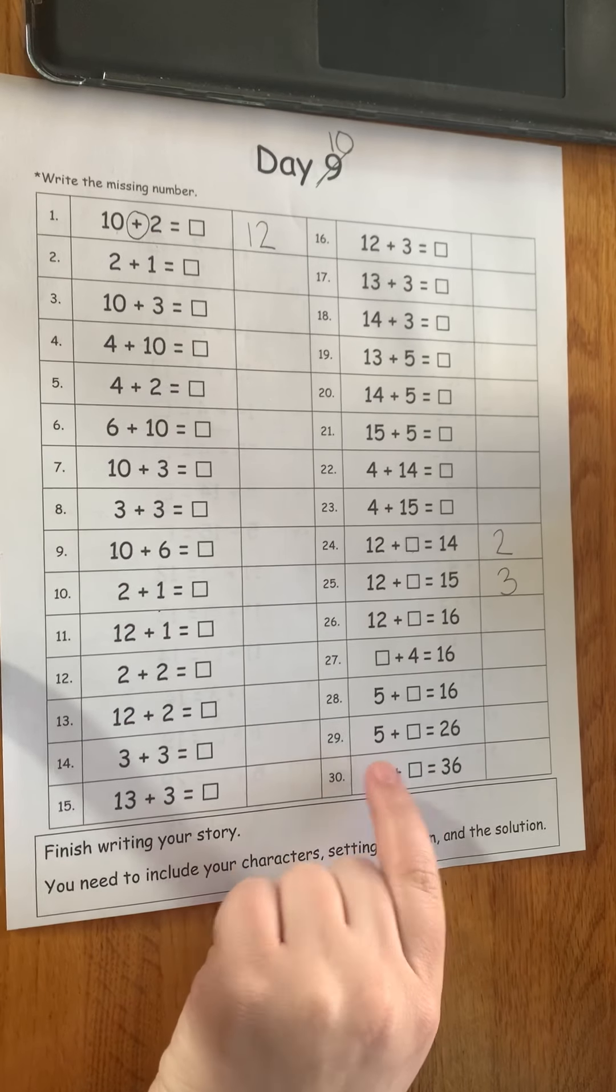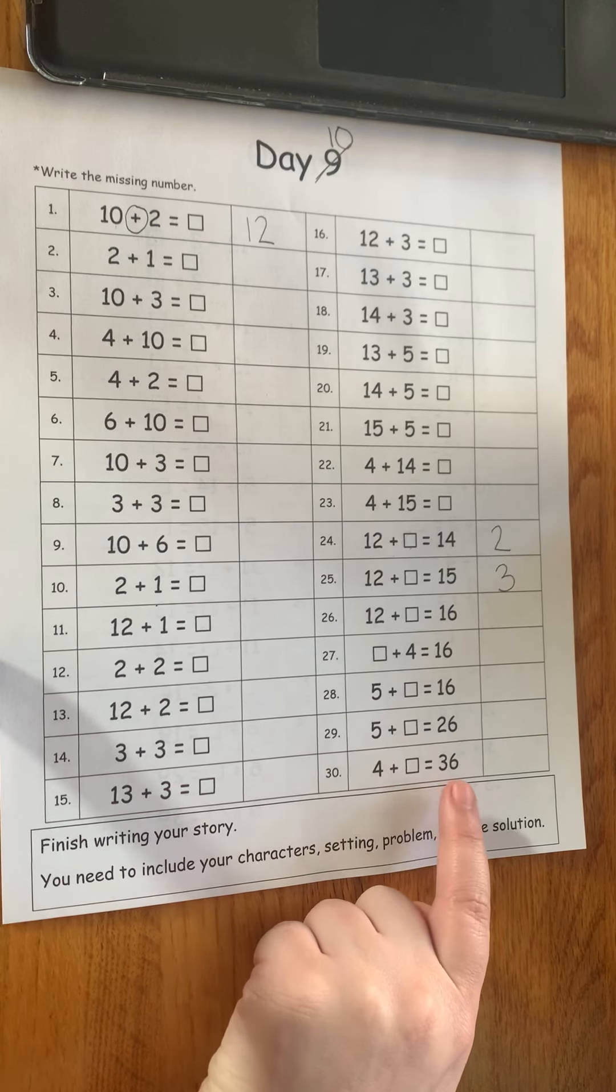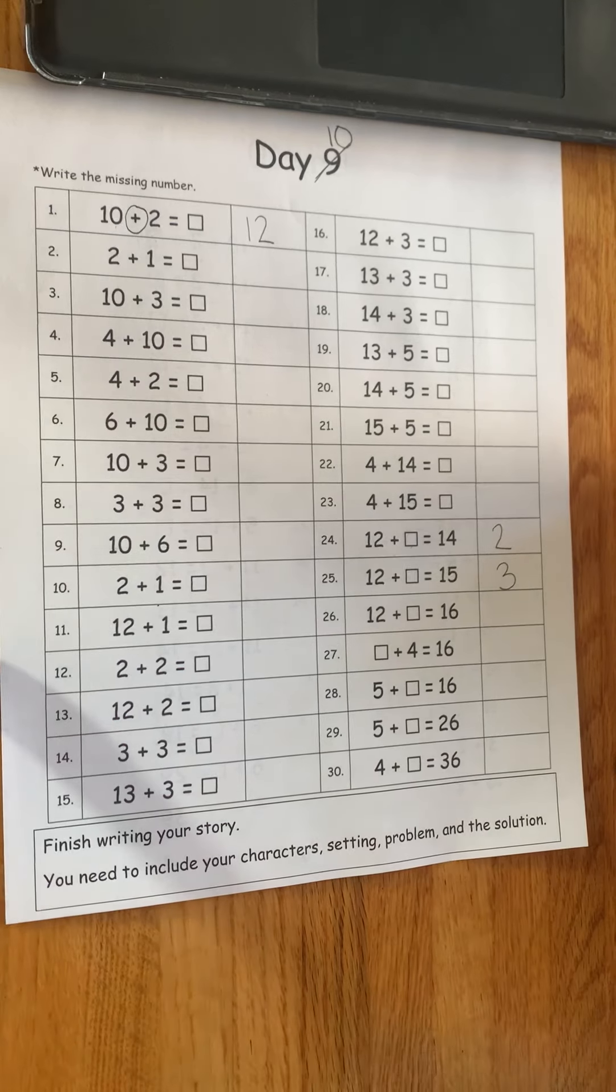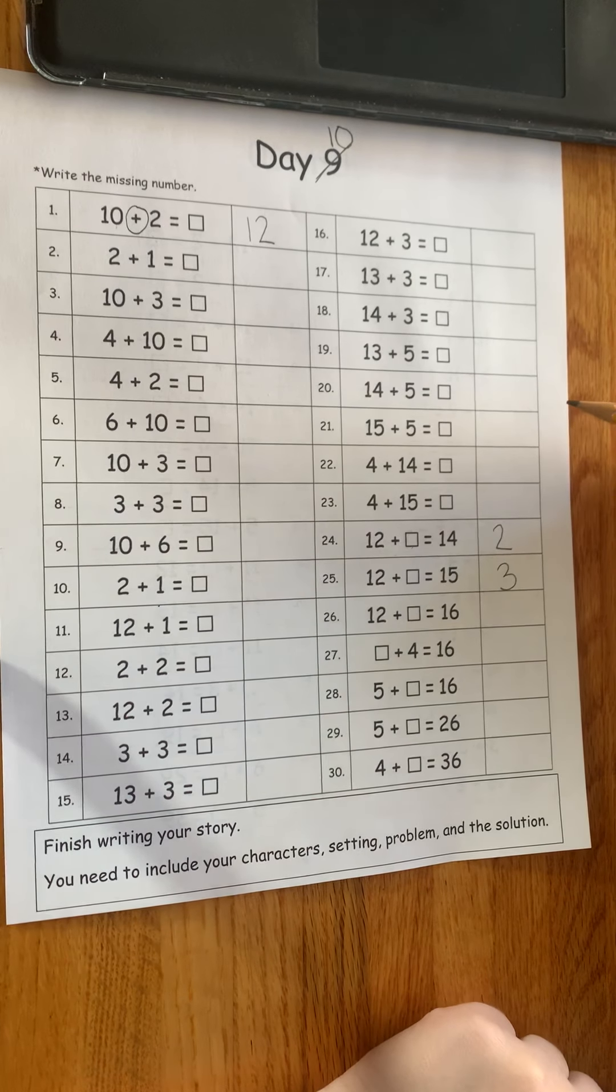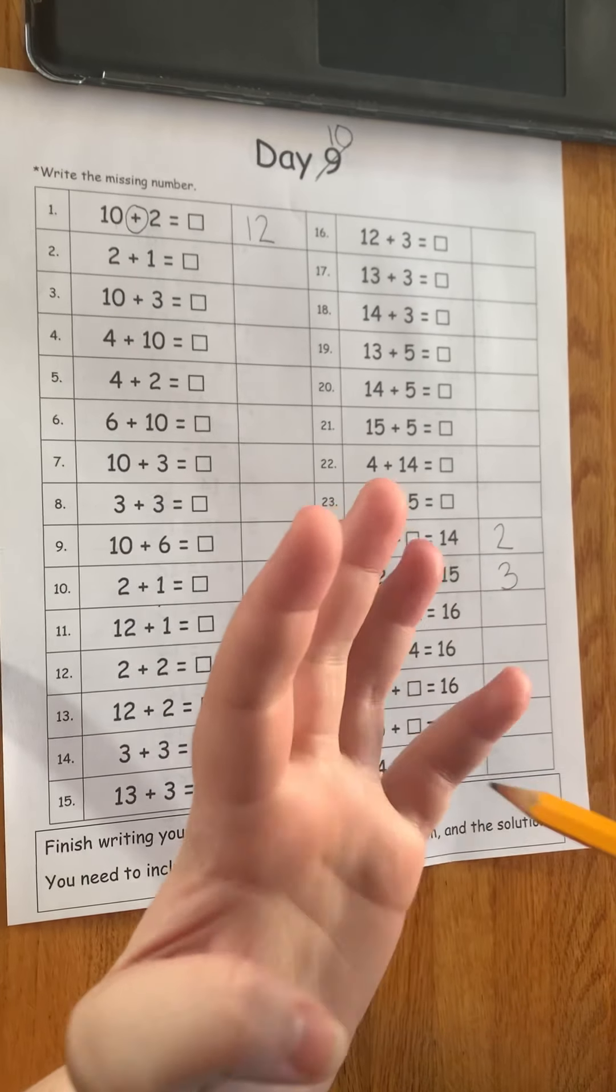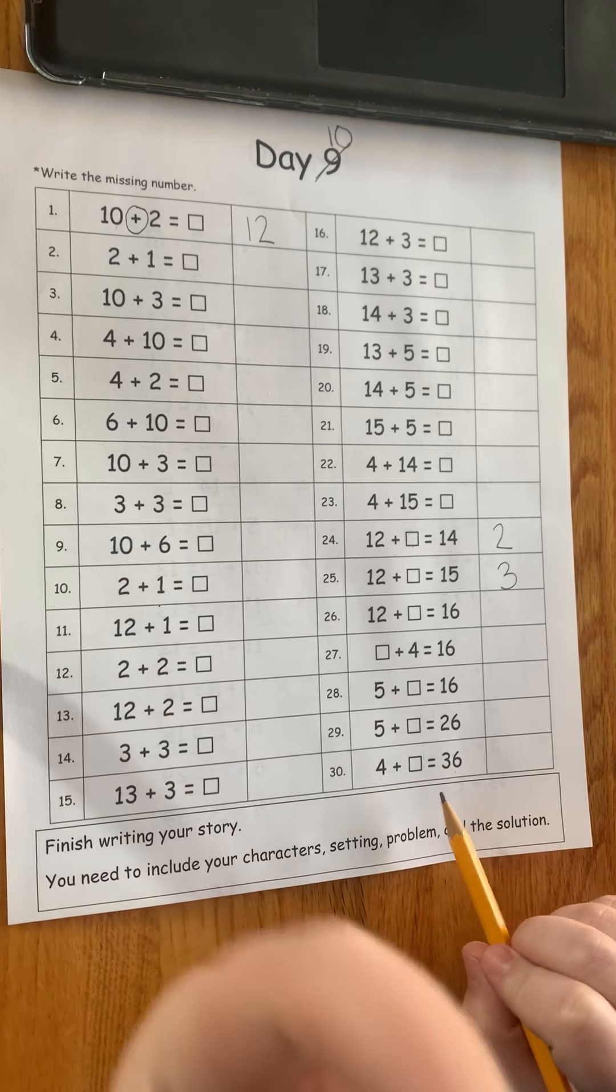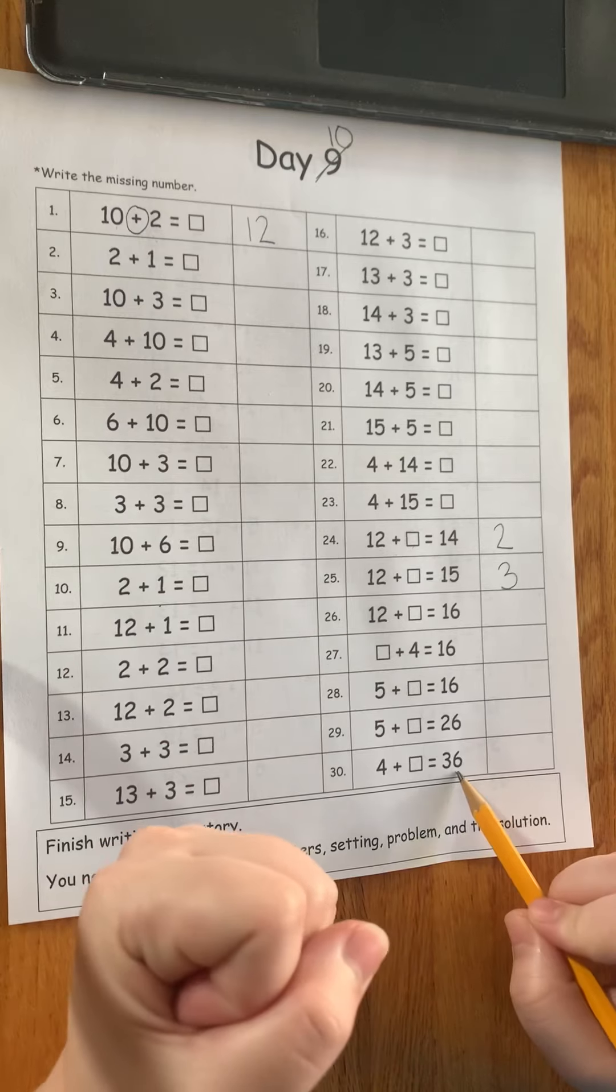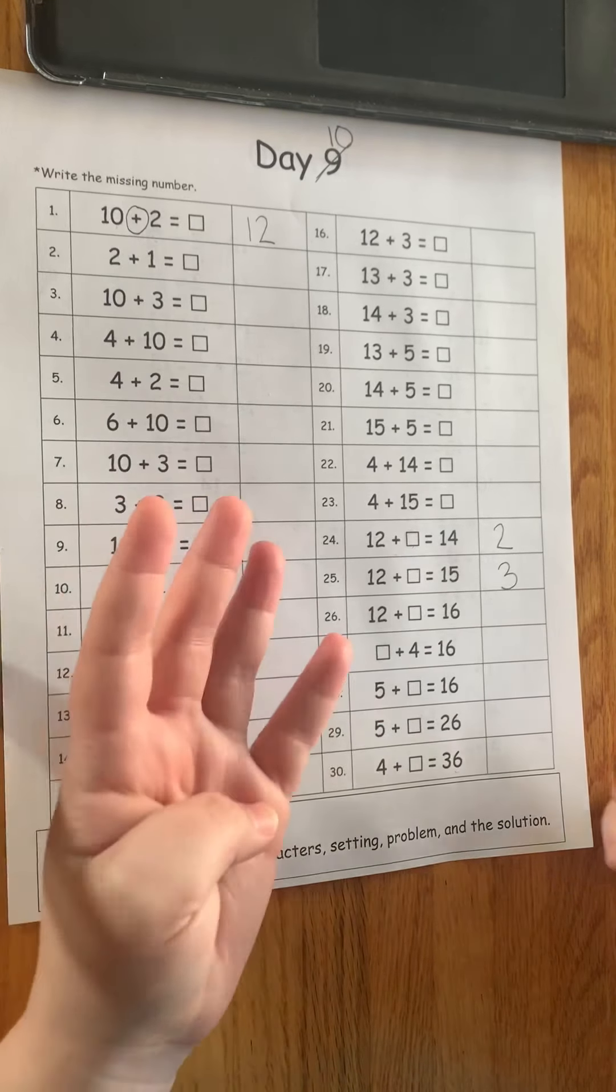And I'll do one more. I'll do this bottom one with you. Number 30: 4 plus blank equals 36. Now 4 and 36 are not really near each other. So I'm actually going to count down for this one. I'm going to start at 36 and I'm going to count down 4 because our number is 4. So 36, 35, oops, sorry. 36, 35, 34, 33, 32.